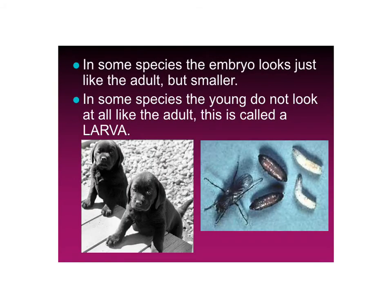In some species, the embryo looks just like the adult, but just smaller — like these puppies. They pretty much look like a dog, just smaller. In other species, the young don't look at all like the adult. They completely change form during their lifetime.